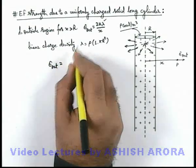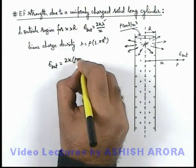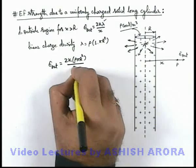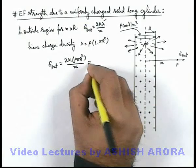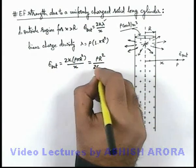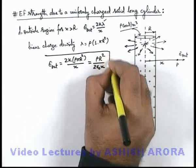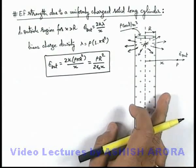The value of outside electric field we can write as 2k λ which is ρπR²/x. If we substitute the value of k as 1/4πε₀, this will result in ρR²/2ε₀x, which is the electric field outside a uniformly charged solid cylinder.